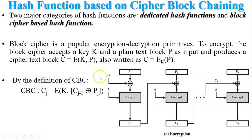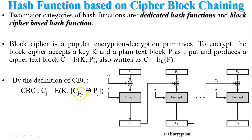By the definition of cipher block chaining, the generalized equation is: cj = Ek(cj-1 XOR pj). Here if j = 1, c0 means IV — the initial vector. So before encryption, IV XOR p1 is computed, then the XOR output is encrypted with key k to generate ciphertext c1. This is the encryption process of cipher block chaining.